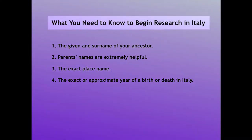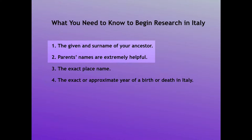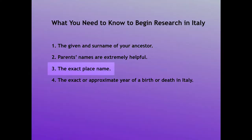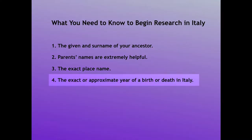When tracing an Italian immigrant back to Italy, you will need this information to correctly identify him in the records of Italy. Of course, his name, but the parents' names would be really helpful too. You will need to know the exact town that he came from and at least an approximate time of an event that would have taken place in Italy, such as a birth, a marriage, or a death.